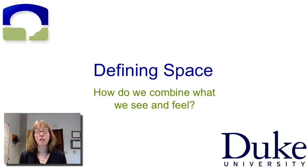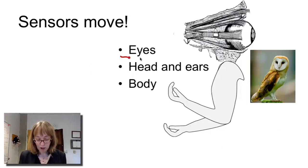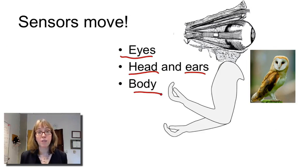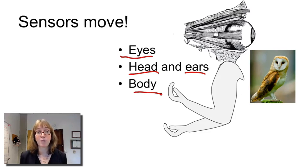We're continuing to talk about how spatial locations are defined, and the challenges that the brain faces when its sensors are moving about in space. Our different sensor types can move — our eyes can move, our head can move, in many species the ears can move as well, and of course the body can move. When the brain tries to figure out whether something you see is making a sound you can hear, or whether something you can touch is the same thing you can see, it has to deal with the fact that information comes in through sensors that have a flexible relationship with each other.